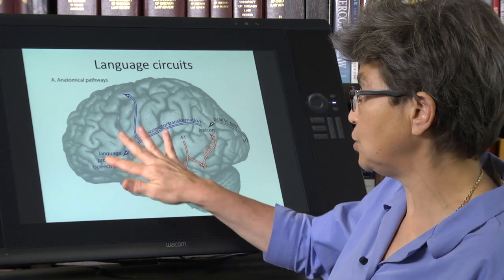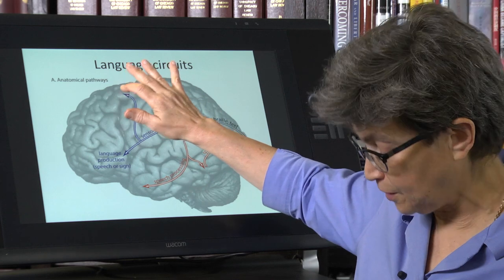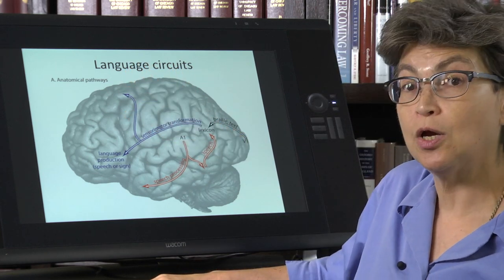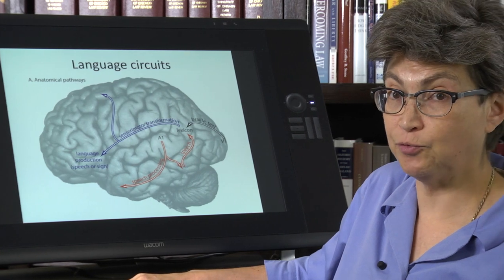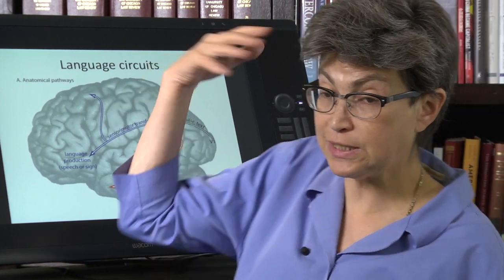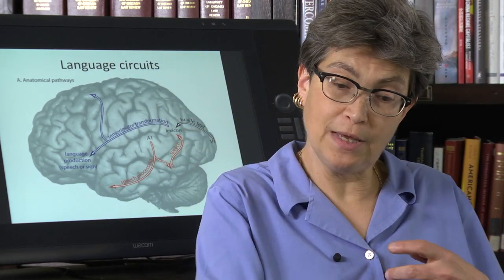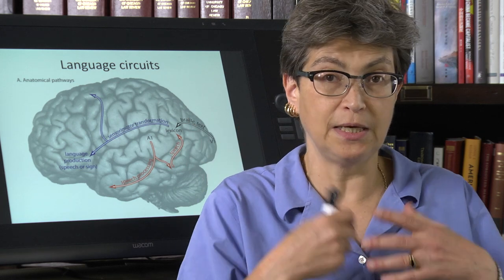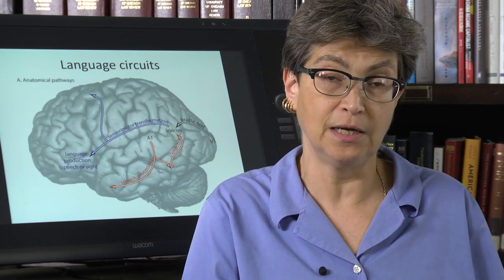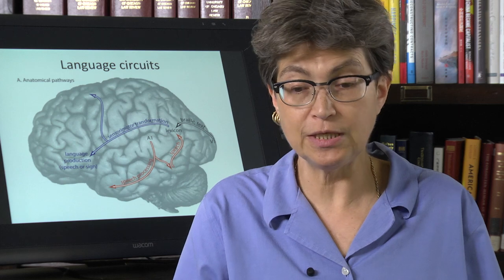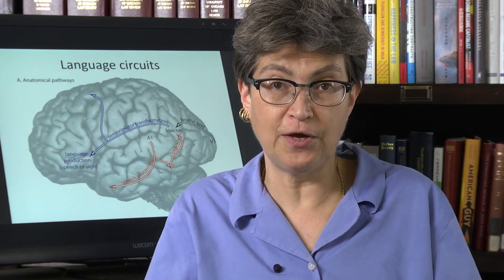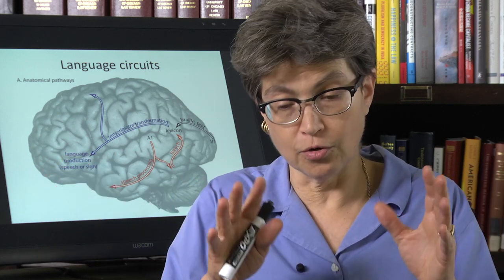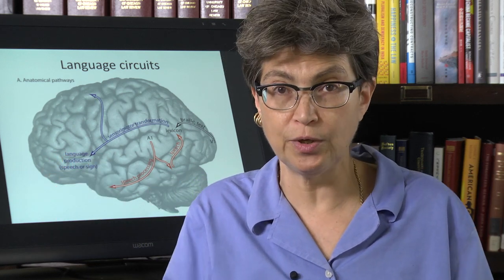And so lesions here or up in this region can produce Broca's aphasia. This is a non-fluent aphasia. They understand what you're saying, but when they go to speak, it comes out completely non-fluently. These are the two extreme versions of aphasia. And there are varieties in between.